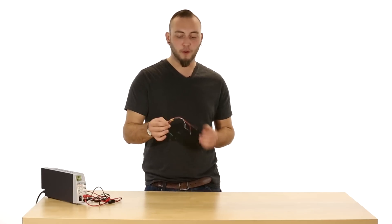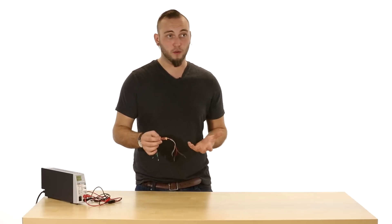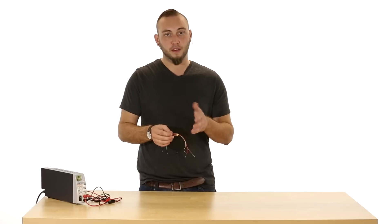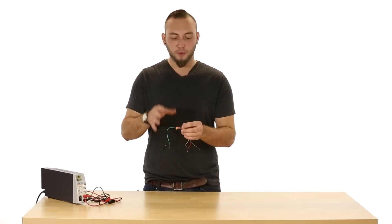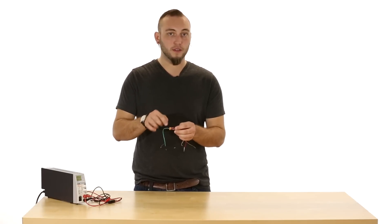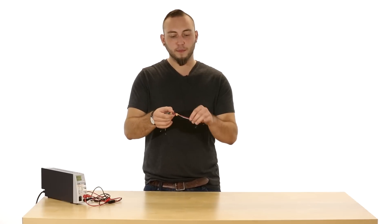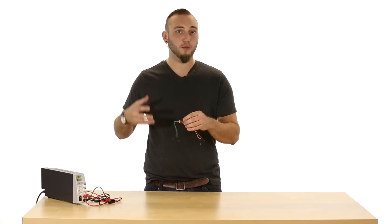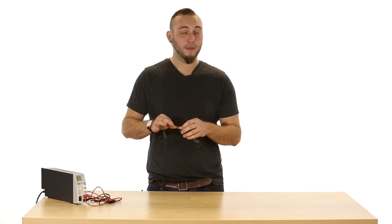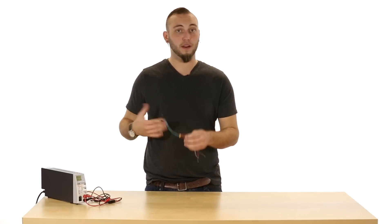The advantage of something like the FemtoBuck is that it's a constant current source. So you supply a voltage on this end and it makes sure that the current doesn't change no matter what the voltage does. In fact as you supply more voltage to this device the current coming out of this side will be the same but the device will consume less current. It's a really efficient way of making sure that your LED doesn't burn itself out.